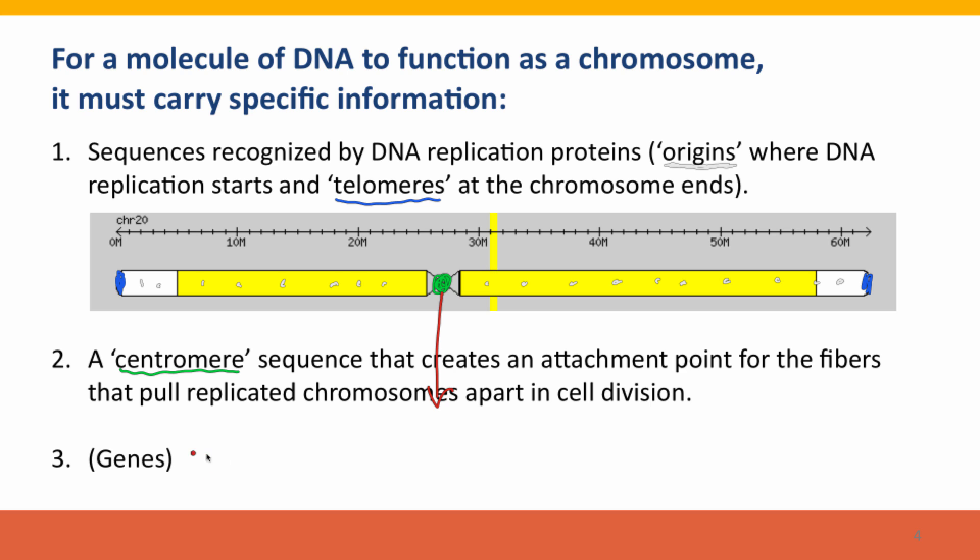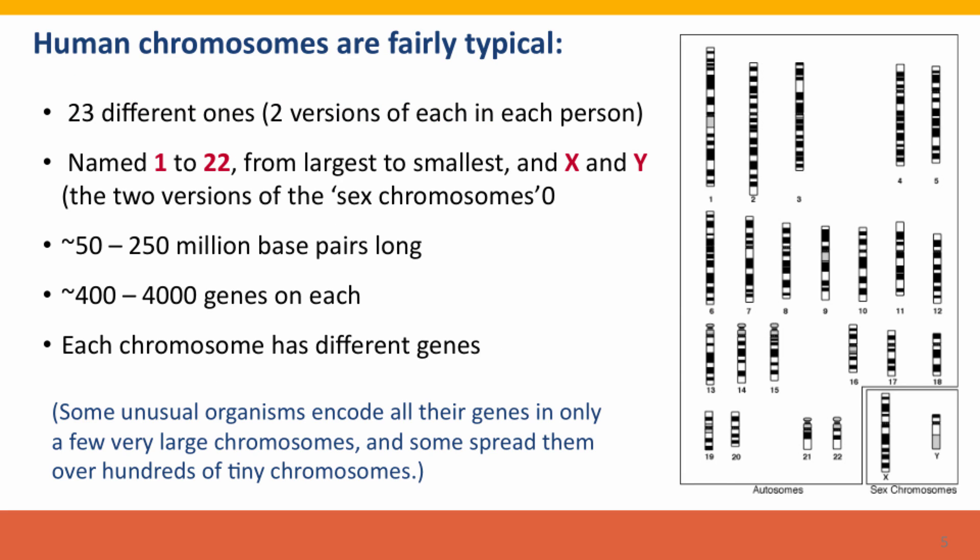Chromosomes also have to have special attachment point sequences called centromeres, one to each chromosome, located at a particular place. This is where the fiber attaches when the cell is going to divide to pull the chromosomes apart. Finally, of course, chromosomes have to have genes. We'll talk about the genes on chromosomes in the next lecture. Human chromosomes, luckily, are fairly typical — we're fairly ordinary animals genetically. If you're female, you have 23 different chromosomes; if you're male, you actually have 24. You have two versions of each of these chromosomes, except for the X and Y chromosome if you're male, and we'll talk about this in Module 4.